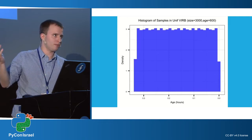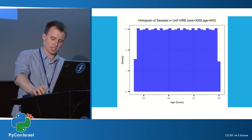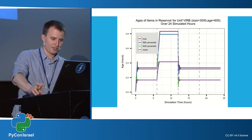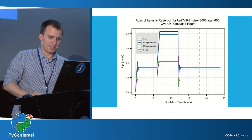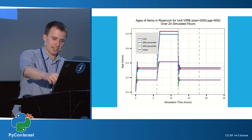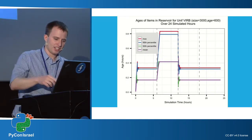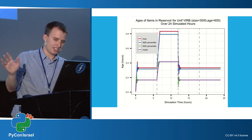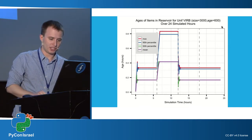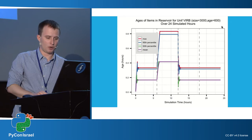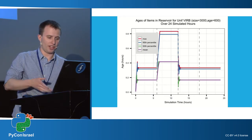The uniform VERB — no prizes for guessing it would be uniformly distributed. Same behavior: the transition at 18 hours is completely seamless, but the transition to one event per second at six hours causes all the ages to just balloon up.